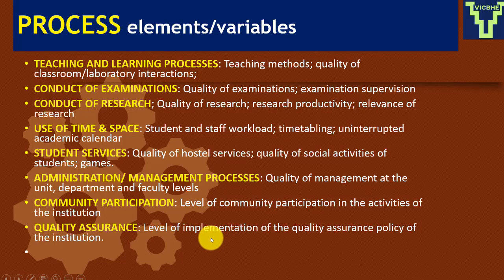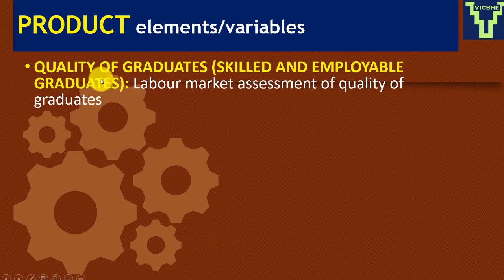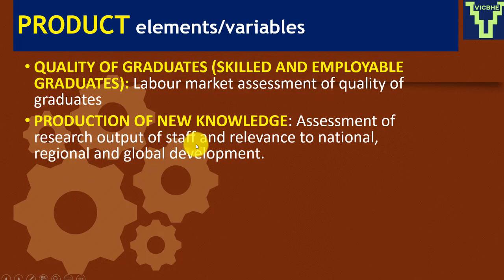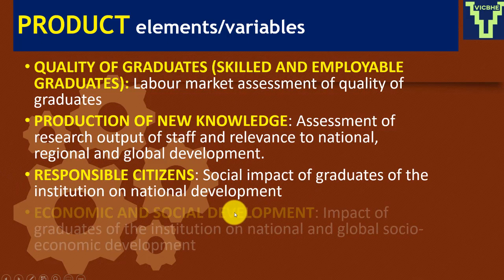We have done input, we've done process, and now we move on to the product. The product is of course the graduates — so we look at the labor market assessment of the quality of graduates. Then production of new knowledge, which is research — assessing the research output of staff and its relevance to national, regional, and global development. And looking at responsible citizens contributing to economic and social development. These are the product elements.